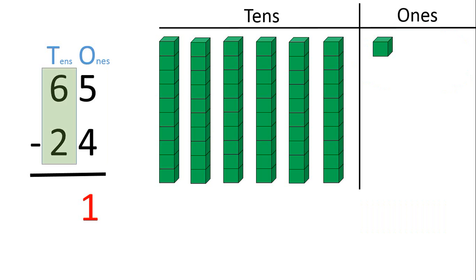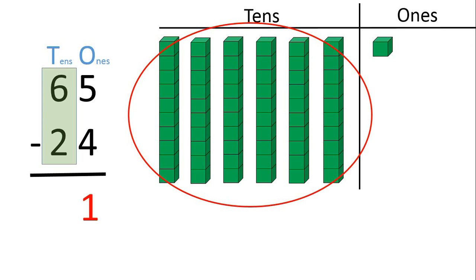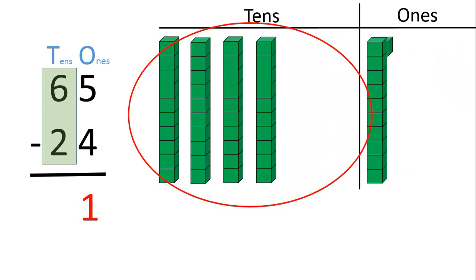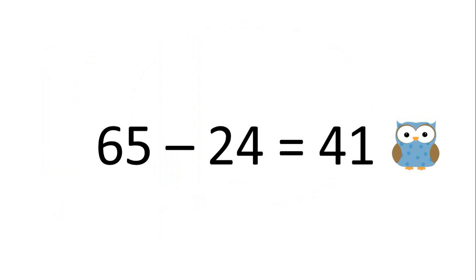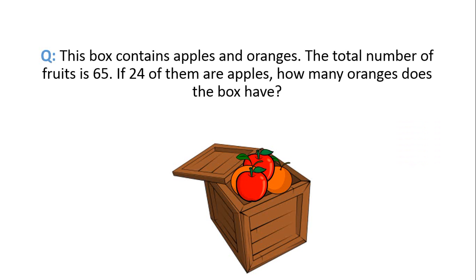Let's move to the tens place. We must subtract 2 from 6. So let's take away 2 tens blocks: 1, 2. We are left with 4 tens blocks. 6 minus 2 equals 4. So write down 4 in the tens place. This gives us 41. So 65 minus 24 equals 41. The answer to our question is: the box has 41 oranges.